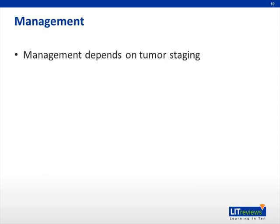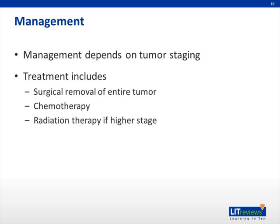Wilms tumor is managed based on tumor staging using the National Wilms Tumor Study, which stages patients from 1 to 5, where stage 5 is bilateral disease. There has been dramatic improvement in survival over the past 20 years. Treatment includes three components: surgical removal of the entire tumor via transection of the abdomen, chemotherapy, and radiation therapy. For stages 1 and 2, patients generally receive vincristine and actinomycin D. At stage 3 or higher, doxorubicin is often added, and radiation begins at stage 3 and above. The prognosis for Wilms tumor is very good, with a cure rate of about 85%.